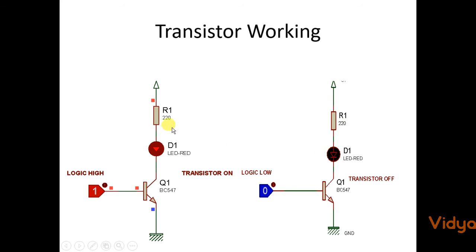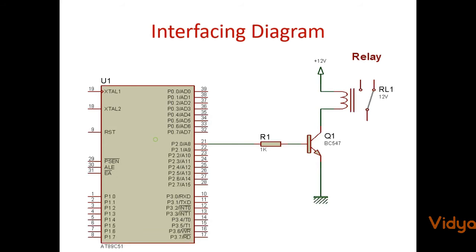And when the base is given with logic low voltage the load turns off. This is the transistorized switching circuit. Now here the R1 and D1 constitutes a load, but instead of D1 and R1 there can be any DC load, for example relay coil can also be used as a DC load for the transistor.